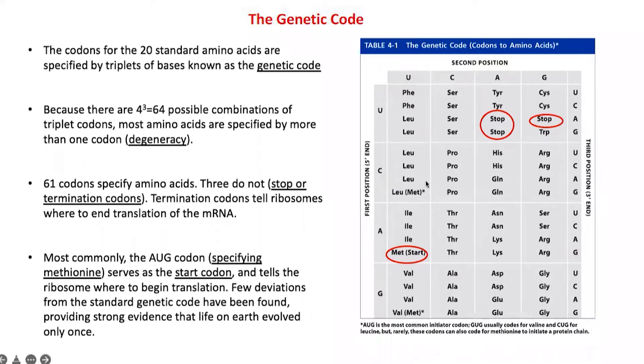An alternate start codon can be CCU G, which sometimes codes for methionine. These are exceptions representing about one percent of cases, found in exotic organisms from extreme environments like hot springs or deep ocean.